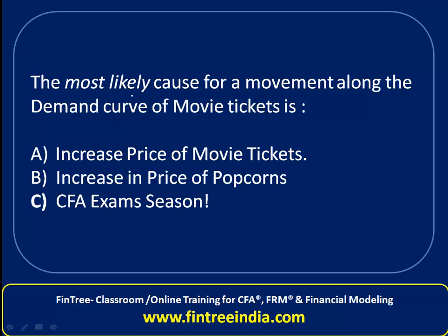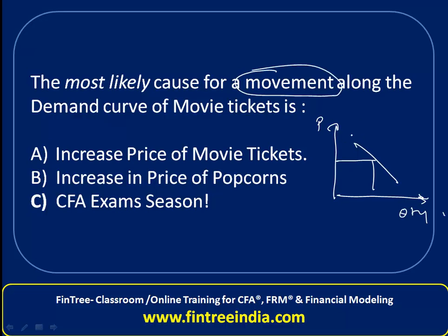It's a funny one that we have here. The most likely cause for movement along the demand curve of movie tickets is... So let's say this is the demand curve, with price on the y-axis and quantity demanded on the x-axis. Movement along the demand curve means that because of a change in price, quantity demanded changes. That means for movement, it has to happen because of a change in price.